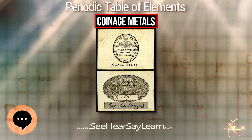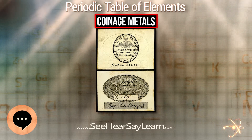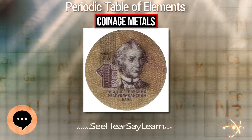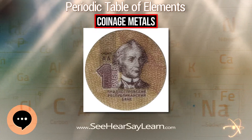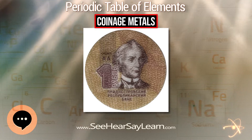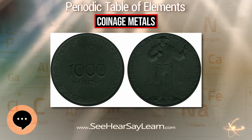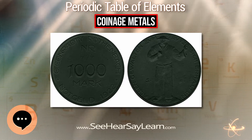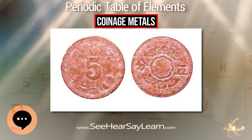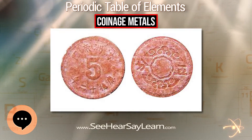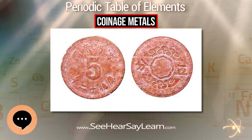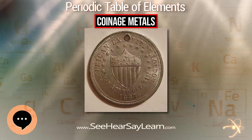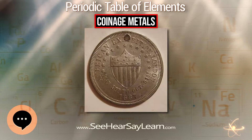Coins were first invented in Aegina, or according to others in Ephesus, Lydia around 650 BC. Ancient India, circa 6th century BC, was one of the earliest issuers of coins in the world. Since that time, coins have been the most universal embodiment of money. These first coins were made of Electrum, a naturally occurring pale yellow mixture of gold and silver.